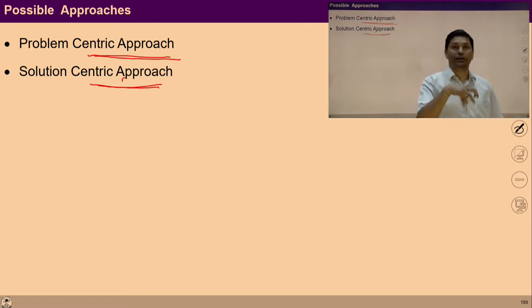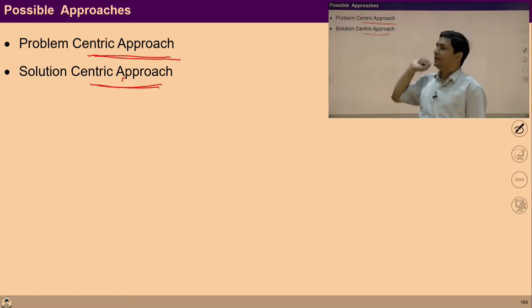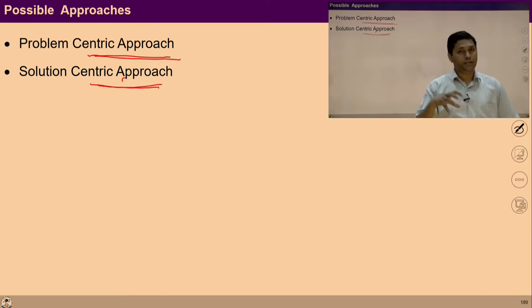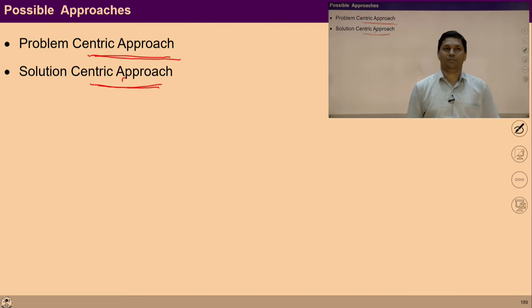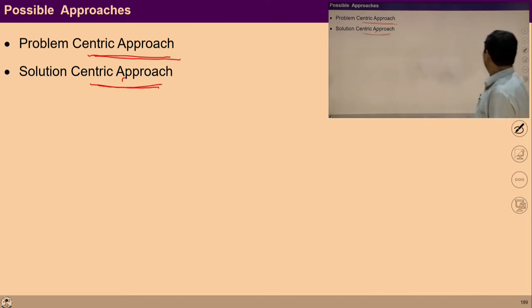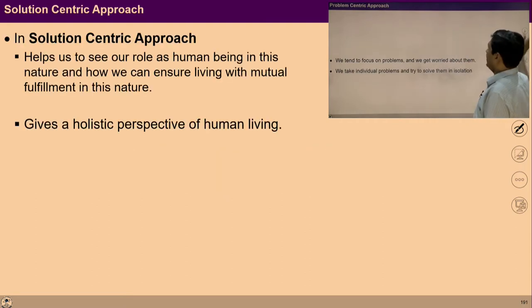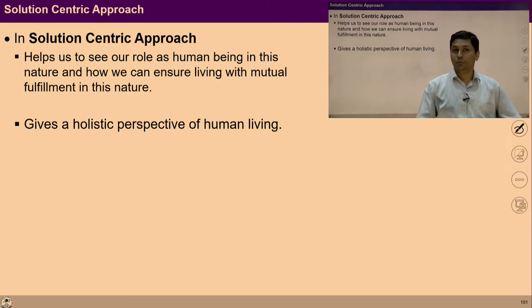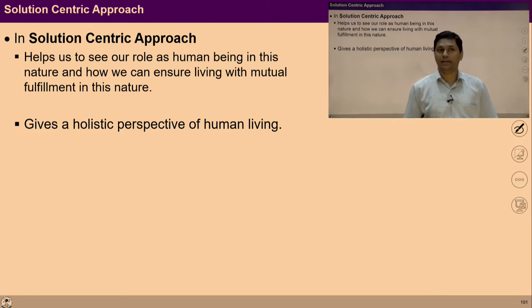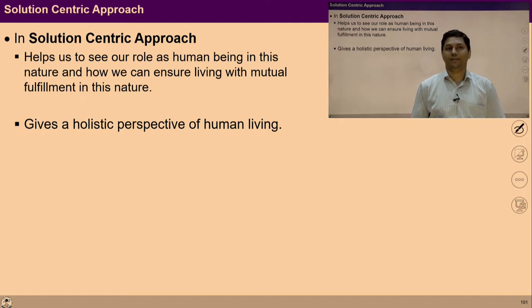In the solution-centric approach, we have a holistic solution in the center. We are generally trying to understand how we can ensure a fulfilling life for ourselves and all, and then work for such living in our day-to-day life. This approach helps us to see our role as a human being in this nature — how we can ensure living with mutual fulfillment. We can try to live this way and verify ourselves that this does lead to a state of fulfillment for oneself and others, ultimately for everyone.